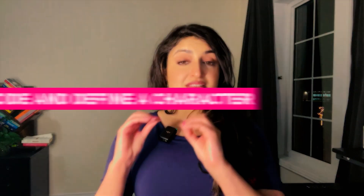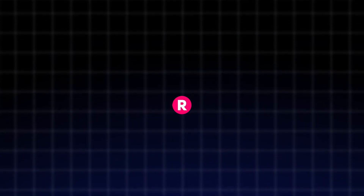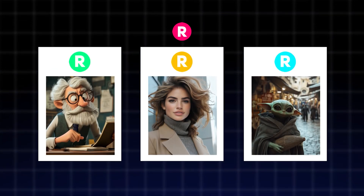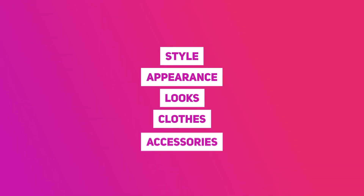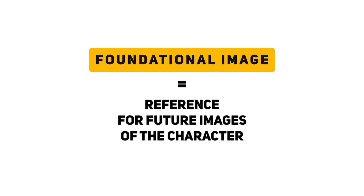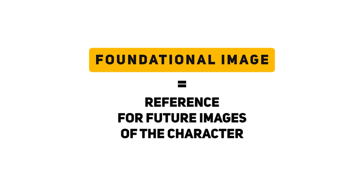First things first, you need to decide and define a character. You'll need an image of your character that'll serve as that reference image or that foundational image to create all the other images. This can be anything from a realistic human to a quirky cartoon or even a fluffy cat. This method will work for any type of character. So pick your character, decide what they look like, and go ahead and prompt for that within Midjourney. Describe their style, their appearance, what they look like, what they're wearing, what accessories they have on. Use that to build the foundational characteristics of your character. The image that you end up with will serve as the reference for all of the other images that follow.